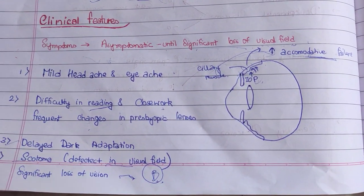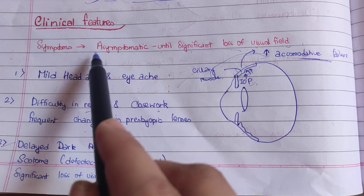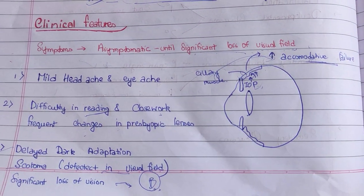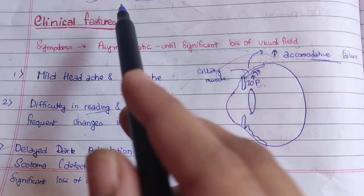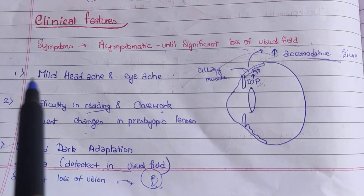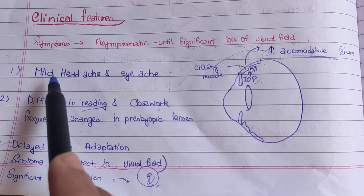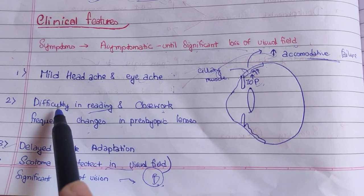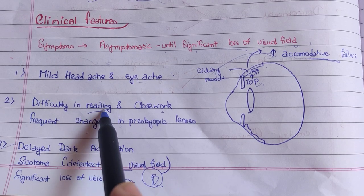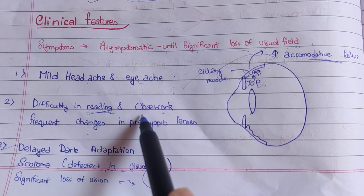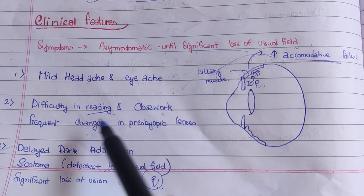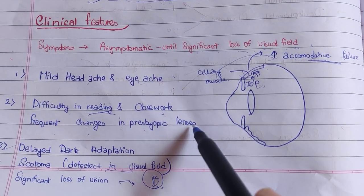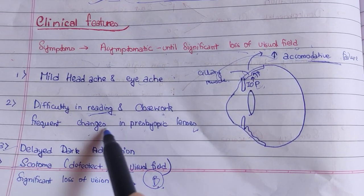Now let us talk about clinical features and symptoms. Usually, patients remain asymptomatic until significant visual field loss has occurred. Patients may complain of mild headache and eye ache. They have difficulty reading near objects and doing close work, and frequently show presbyopic lens changes — because increased IOP puts pressure on the ciliary muscle's nerve supply, causing accommodative failure.